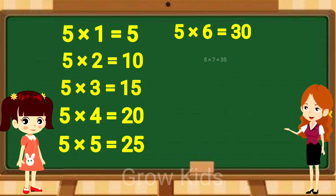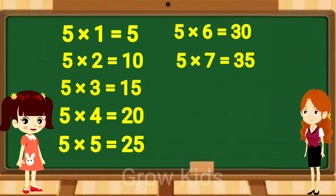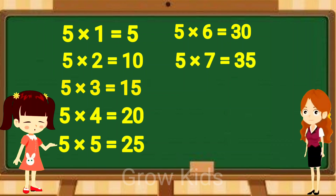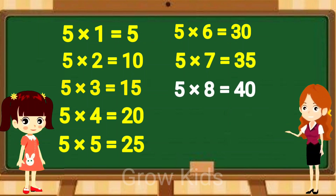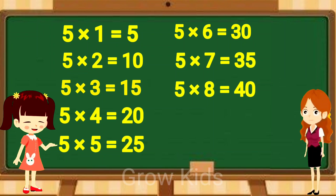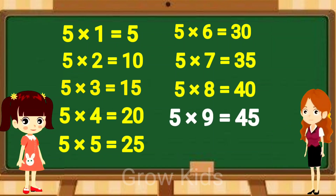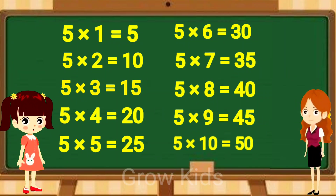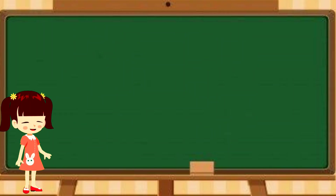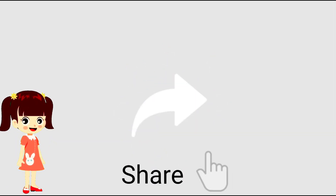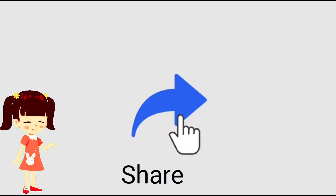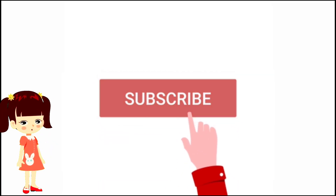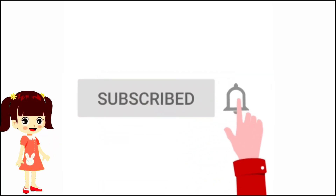5 sevens are 35. 5 eights are 40. 5 nines are 45. 5 tens are 50. Subscribe to my channel Bro Kids.